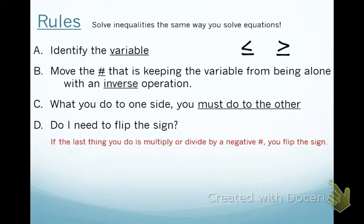So the only difference is today we're going to have those kind of symbols instead of having equal signs. The first thing is to identify the variable — a variable is just a letter. Then it says to move the number that's keeping the variable from being alone with an inverse operation. Inverse operations are operations that undo each other. Addition and subtraction undo each other.